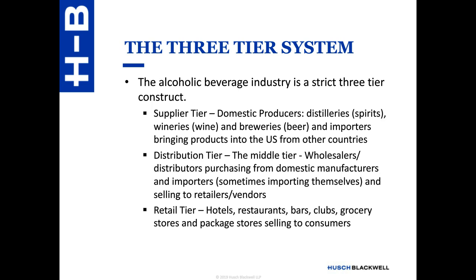Wholesalers and distributors sometimes act as importers and distributors themselves, and then resell to retailers and vendors. The third tier is the retail tier. On the retail side, we have two types: on-premise retailers — hotels, restaurants, bars, clubs, taverns — where a patron comes in, orders a drink, consumes it on the premises, and then vacates. The other type is off-premise retail sales, where a consumer comes in, picks their product, pays for it, and leaves the premises to consume it elsewhere. Off-premise licenses generally do not permit on-premises consumption except in very limited circumstances like tastings.